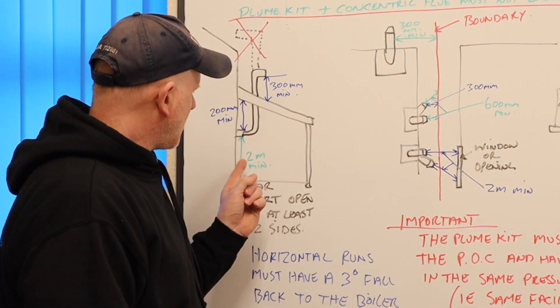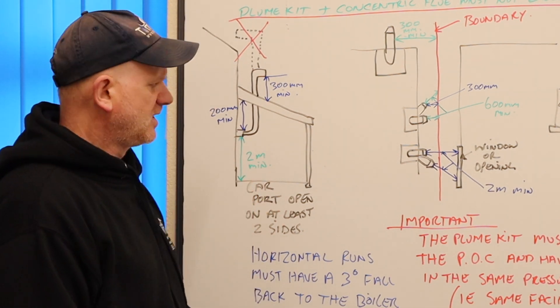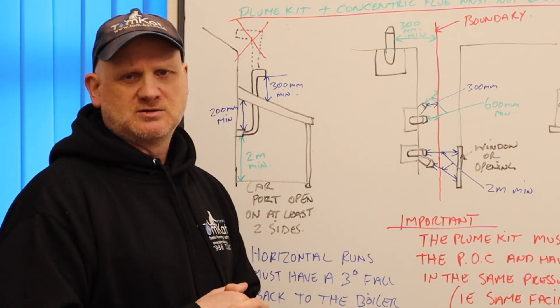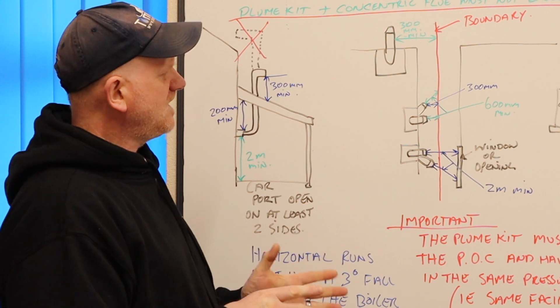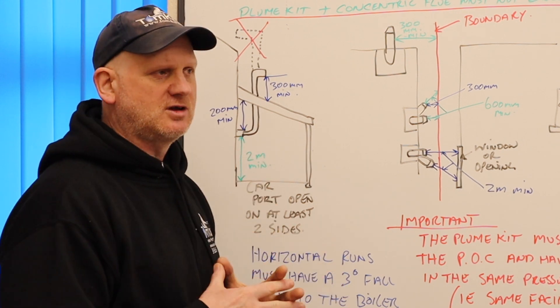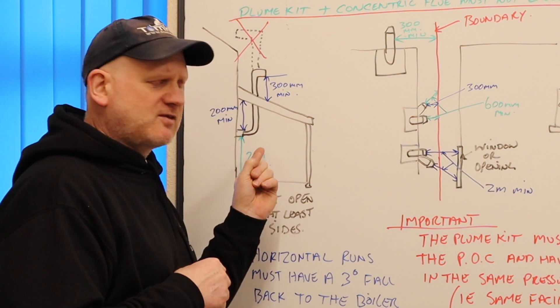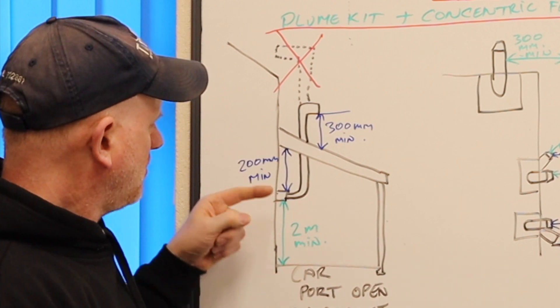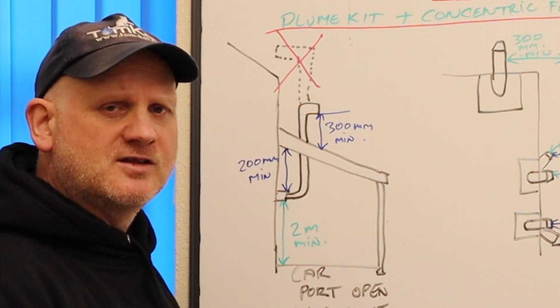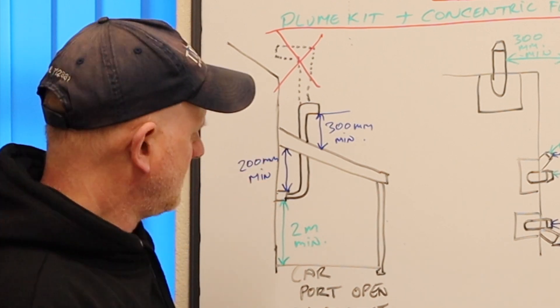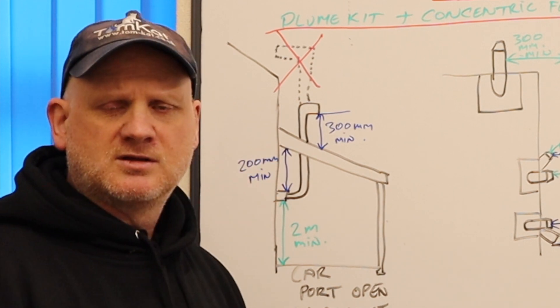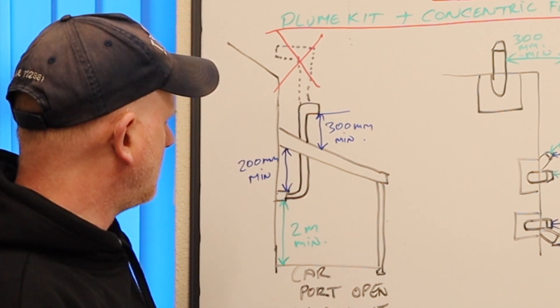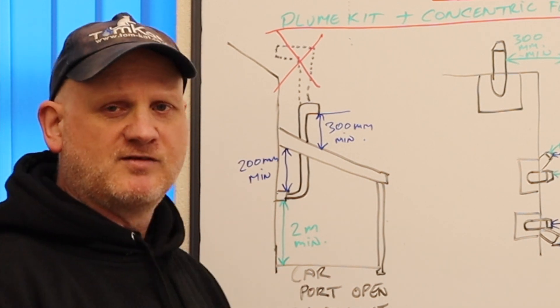First one is this carport one we've got here. Now again, if the manufacturer says you cannot do this, then you can't. But I know Baxi and Worcester, if you've got their flue system under a carport, prefer you to do this. So we need to still install the flue as it should be. So 200 away from the eaves or the carport, but we still need to be 2 metres off the floor.